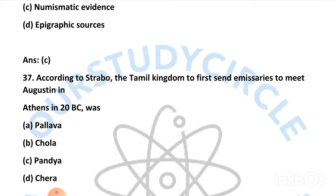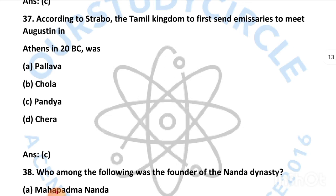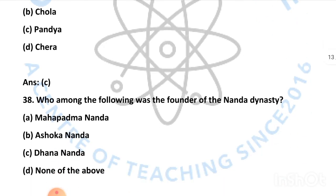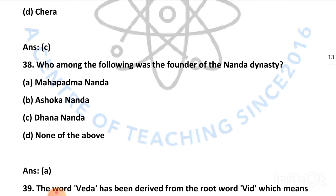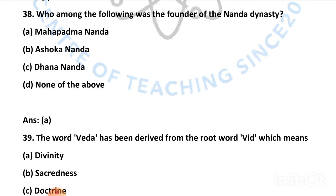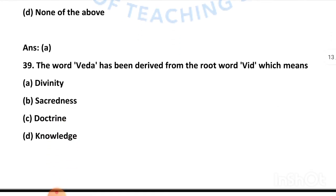Our next question is: according to Strabo, the Tamil kingdom to first send emissaries to meet Augustus in Athens in 20 BC was — and the right answer is Pandya. Our next question is: who among the following was the founder of the Nanda dynasty? — and the right answer is Dhanananda.